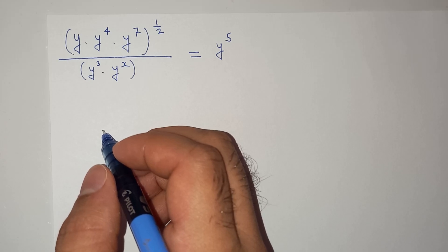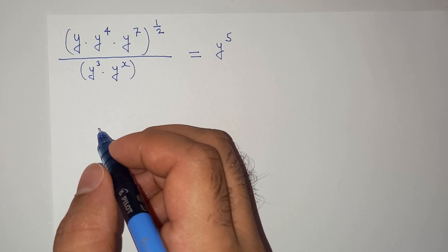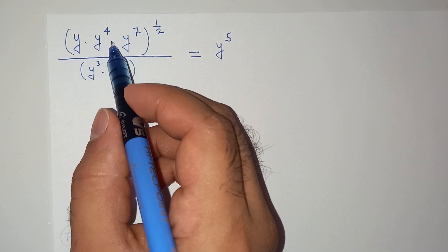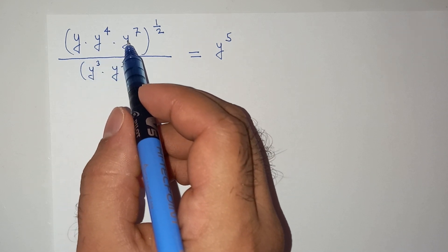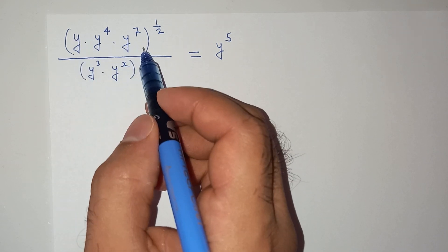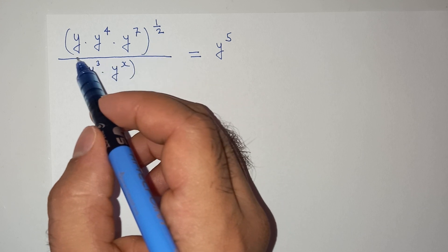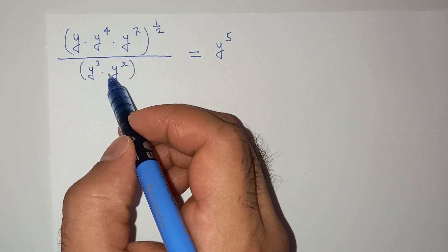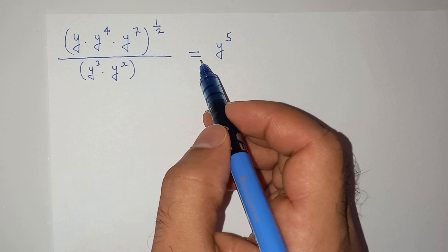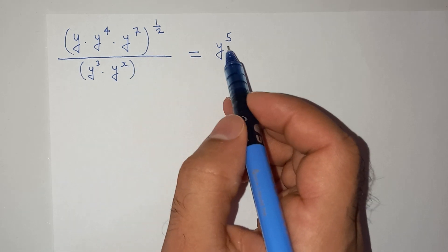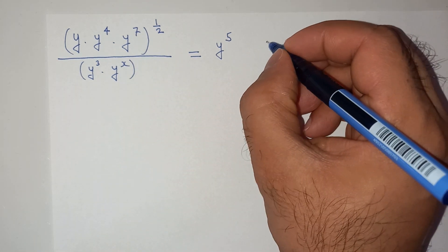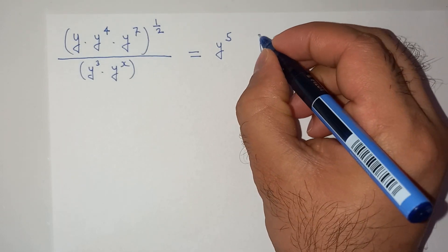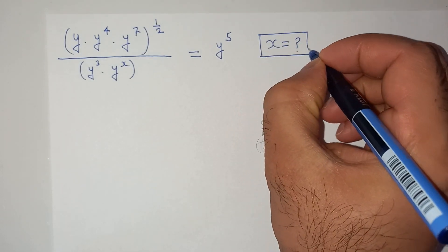Hi friends, welcome back to your channel. We are going to solve this question today, which is y multiplied by y power 4 multiplied by y power 7, bracket close power 1 by 2, whole divided by y power 3 multiplied y power x equals to y power 5, and we have to find the value of x.